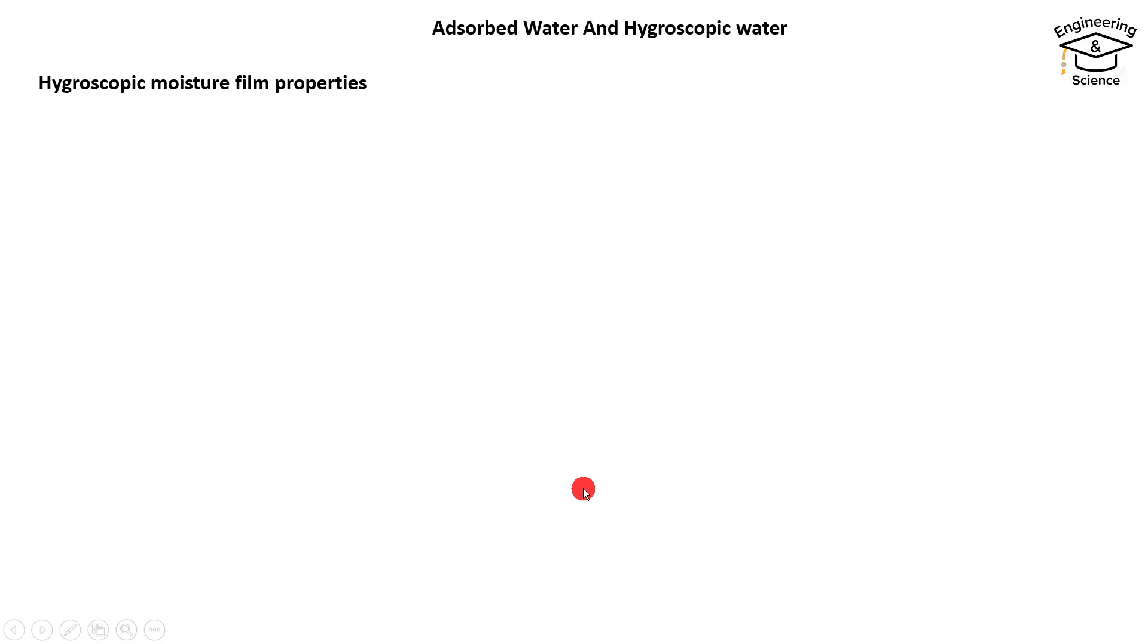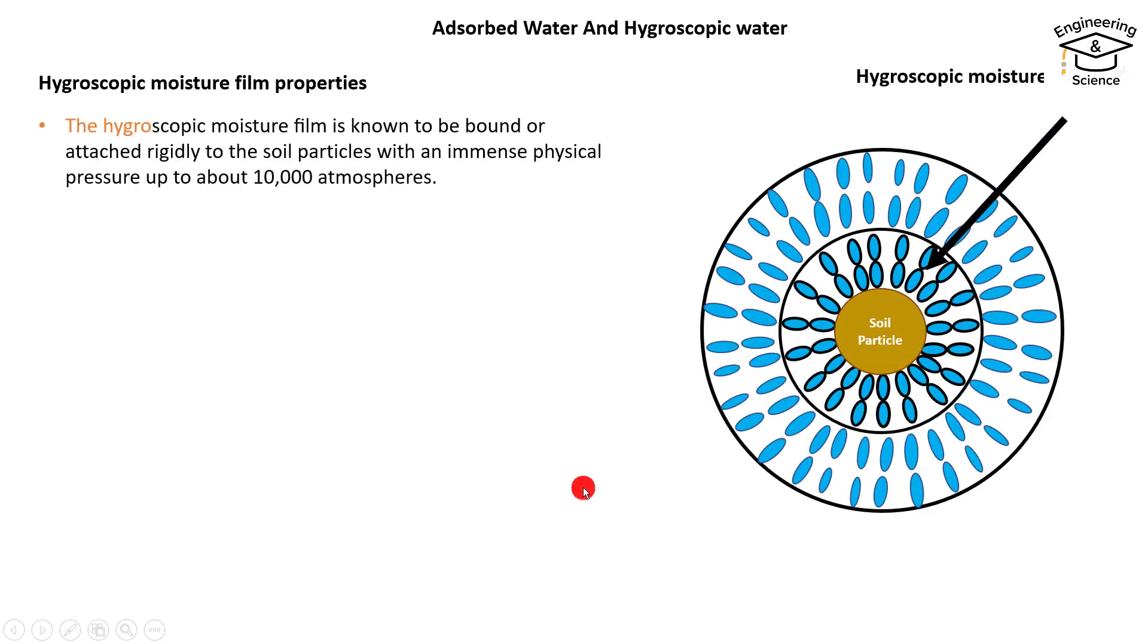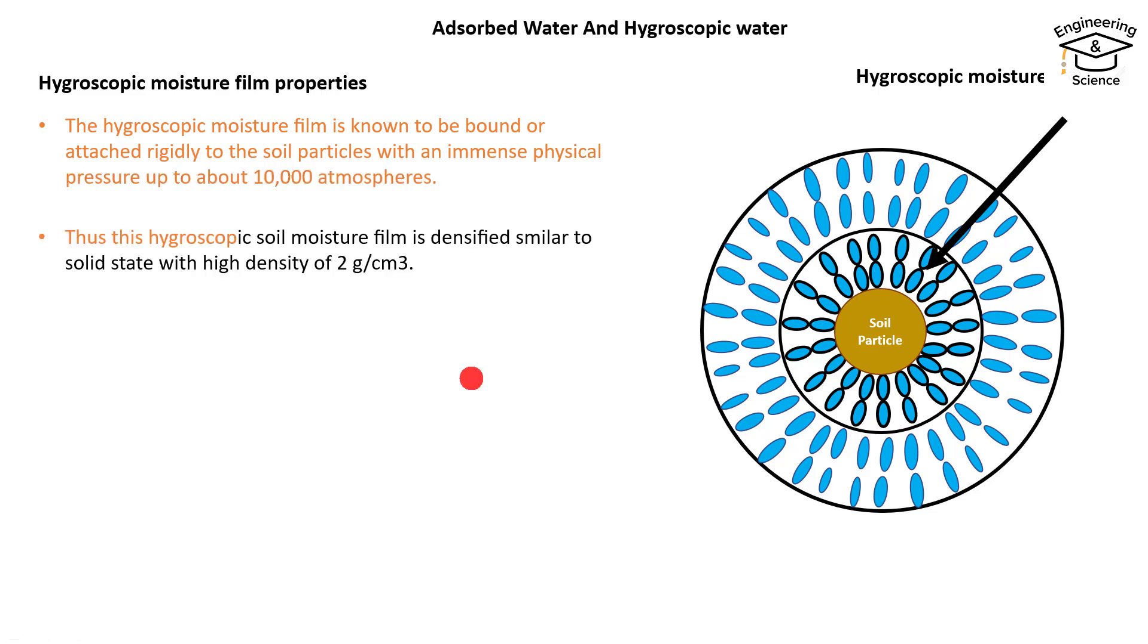The hygroscopic moisture film is known to be bound or attached rigidly to the soil particles with an immense physical pressure up to about 10,000 atmospheres. This hygroscopic soil moisture film is densified similar to solid state with high density of 2 grams per cubic centimeter. We know that the density of normal water is 1.